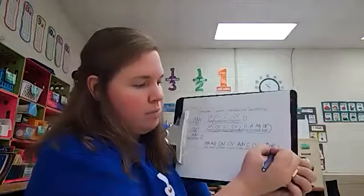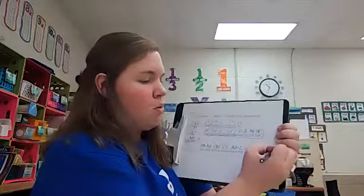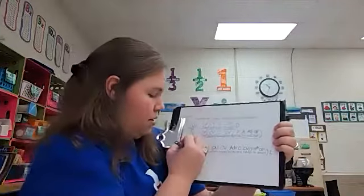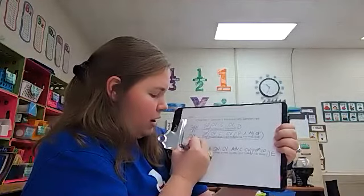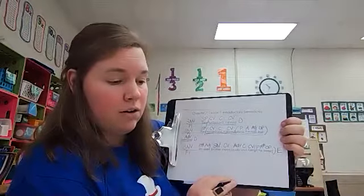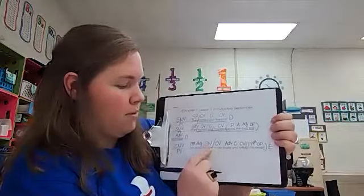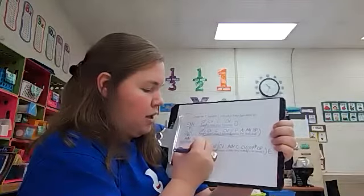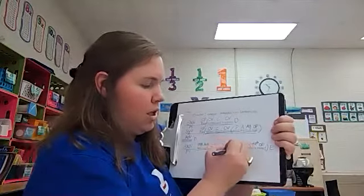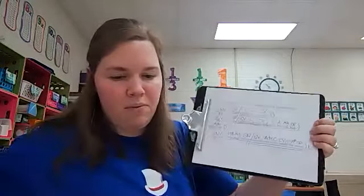Look at the punctuation at the end. This is an exclamation point. Strong feeling. Exclamatory sentence. That follows the subject noun verb pattern one. Where will we divide our sentence? Before the first verb. So right before snores. So the subject is my older brother. The predicate is snores loudly and talks in his sleep.